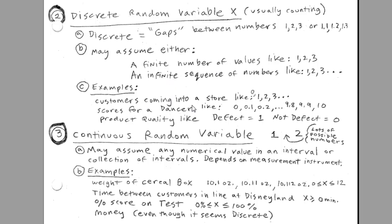Examples of discrete: customers coming into the store, we could have 0, 1, 2, 3. Scores for a dancer, right? 0, 0.1, 0.2. Even though this doesn't seem like counting, it is. We're 0, 0.1, 0.2, et cetera, all the way up to 10. We could also have product quality like defect equals 1, not defect equals 0.